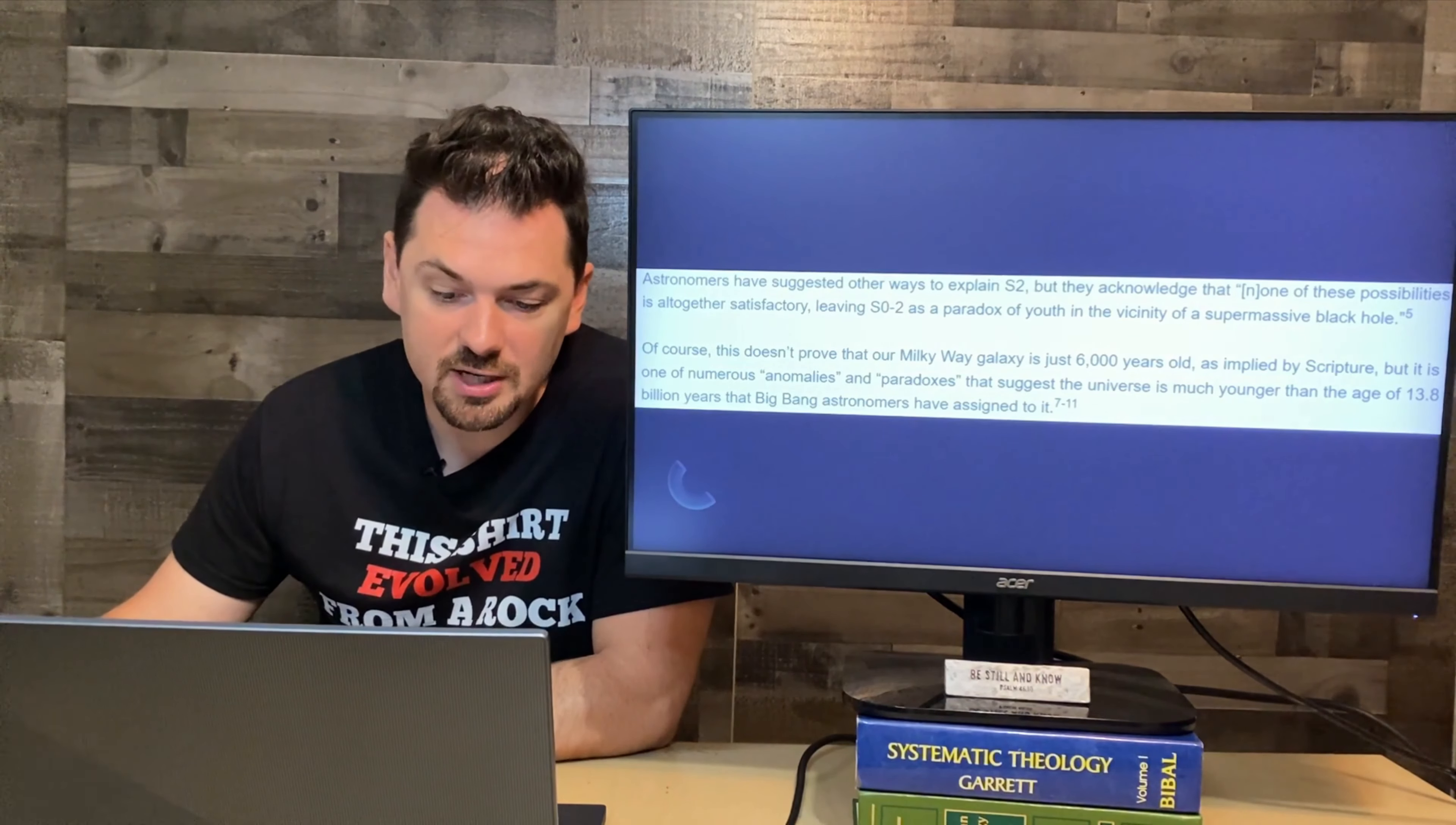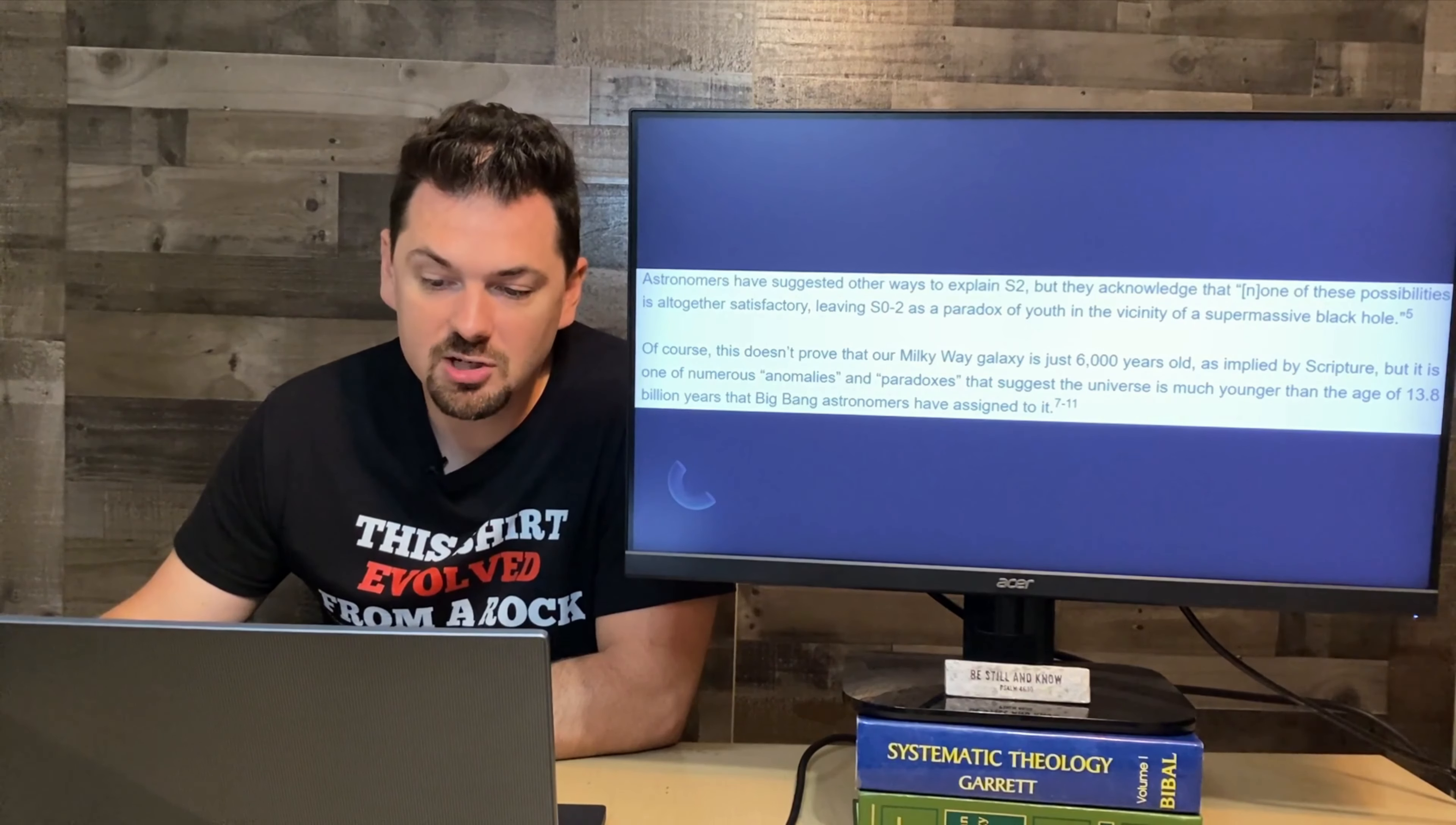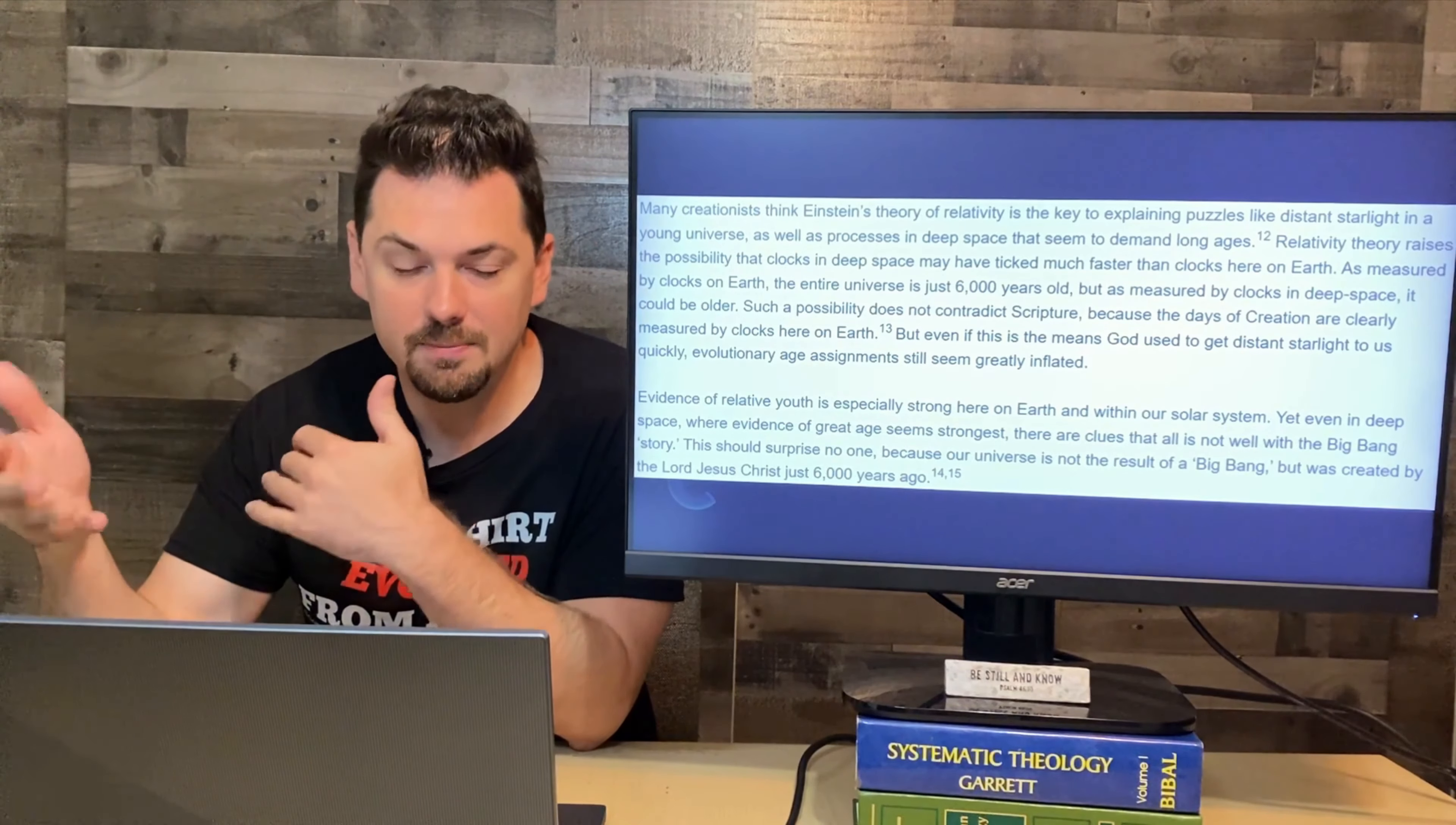Astronomers have suggested other ways to explain S-2, but they acknowledge that none of these possibilities is altogether satisfactory, leaving S-2 as a paradox of youth in the vicinity of a supermassive black hole. Of course, it doesn't prove that our Milky Way galaxy is just 6,000 years old, fair enough, as implied by scripture, but it is one of numerous anomalies and paradoxes that suggest the universe is much younger than the age of 13.8 billion years that Big Bang astronomers have assigned to it. They're always adding these billions and millions of years. That's what's unfortunate. And that's what frustrates me. I don't think you should throw out any dates, just say we don't know. But I hated how the textbooks always say millions and billions of years, even though there's no evidence backing that up.